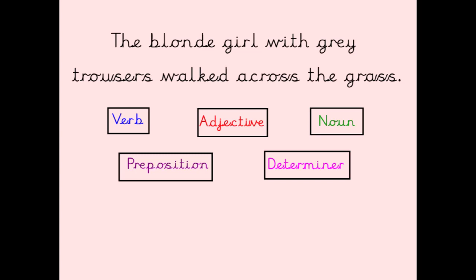To start with, I want you to just have a look at the sentence on the screen: 'The blonde girl with grey trousers walked across the grass.' Can you identify any of the words? Can you see a verb? Can you see an adjective? Are there more than one adjectives? Can you see a noun, a preposition, a determiner? Before moving on, see if you can identify each of those types of words.